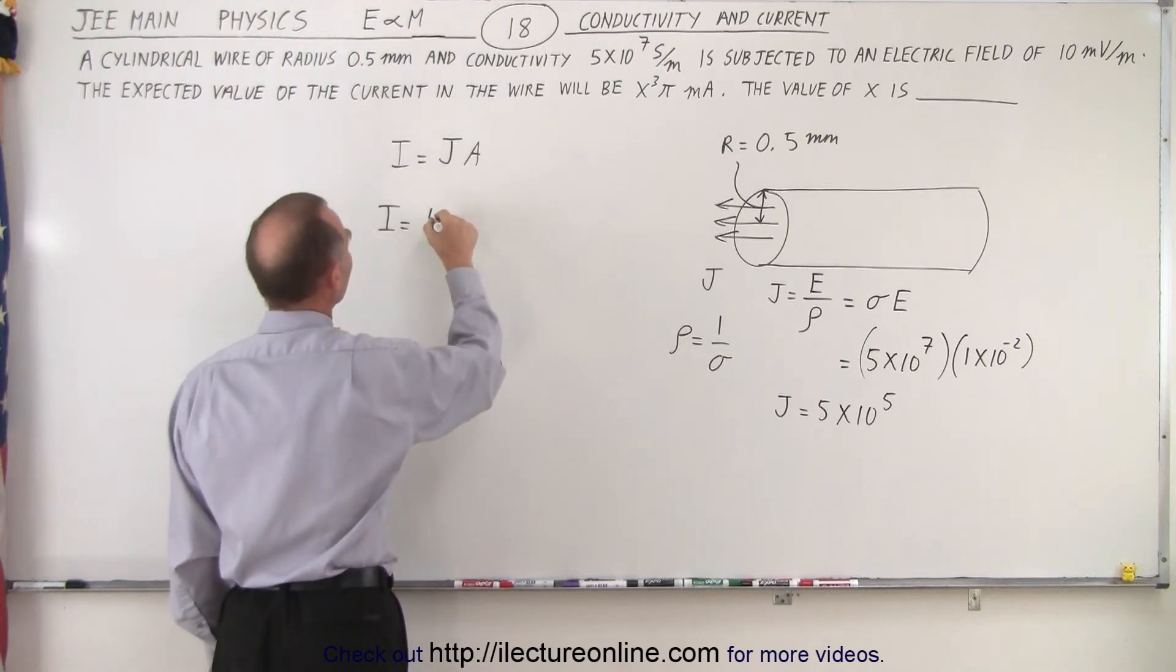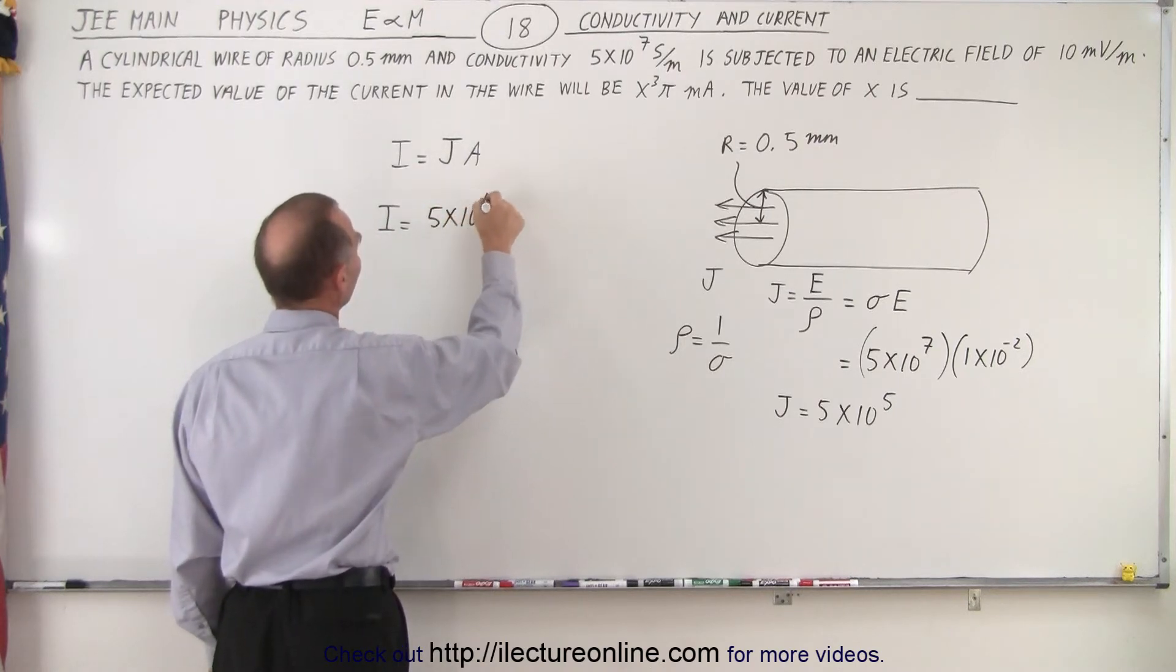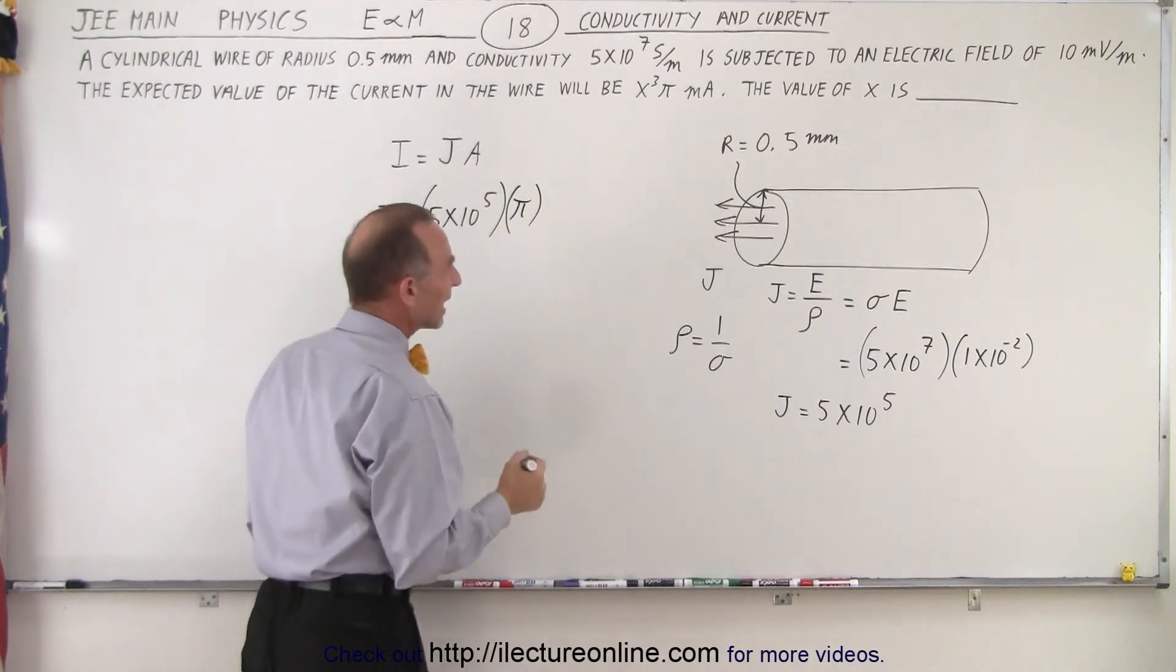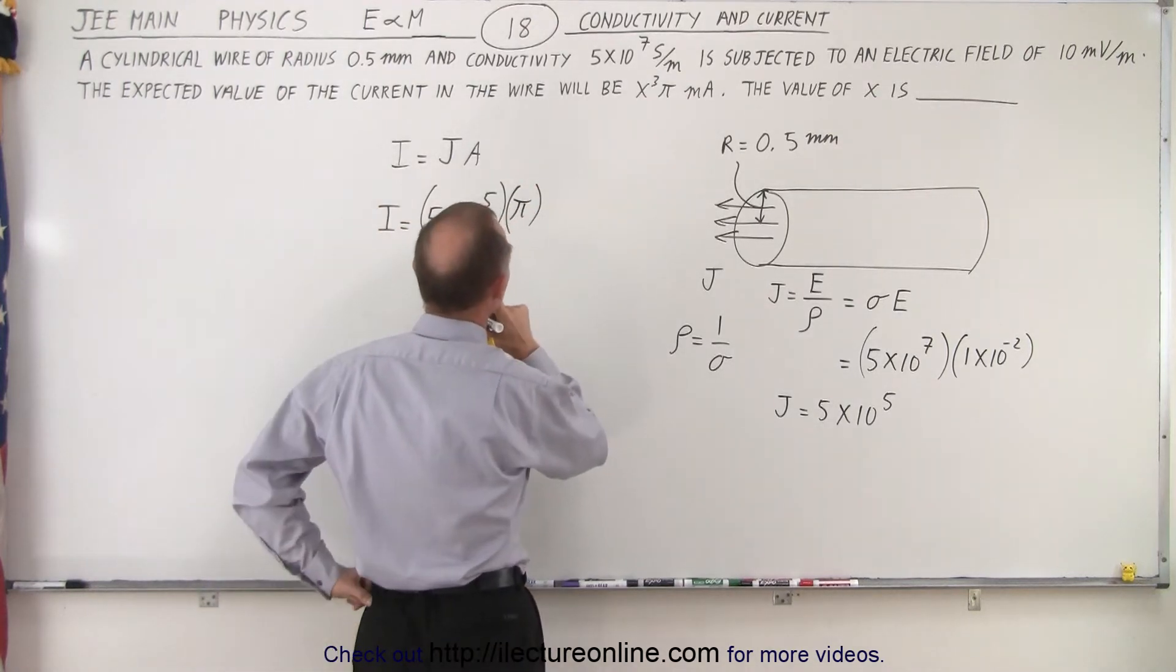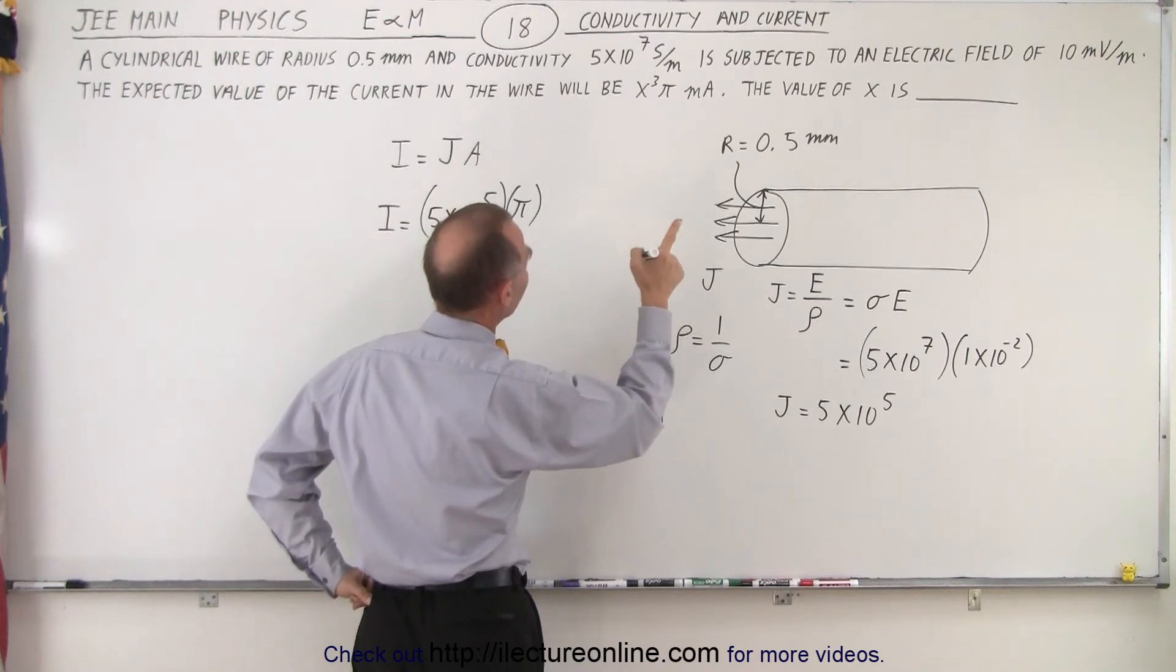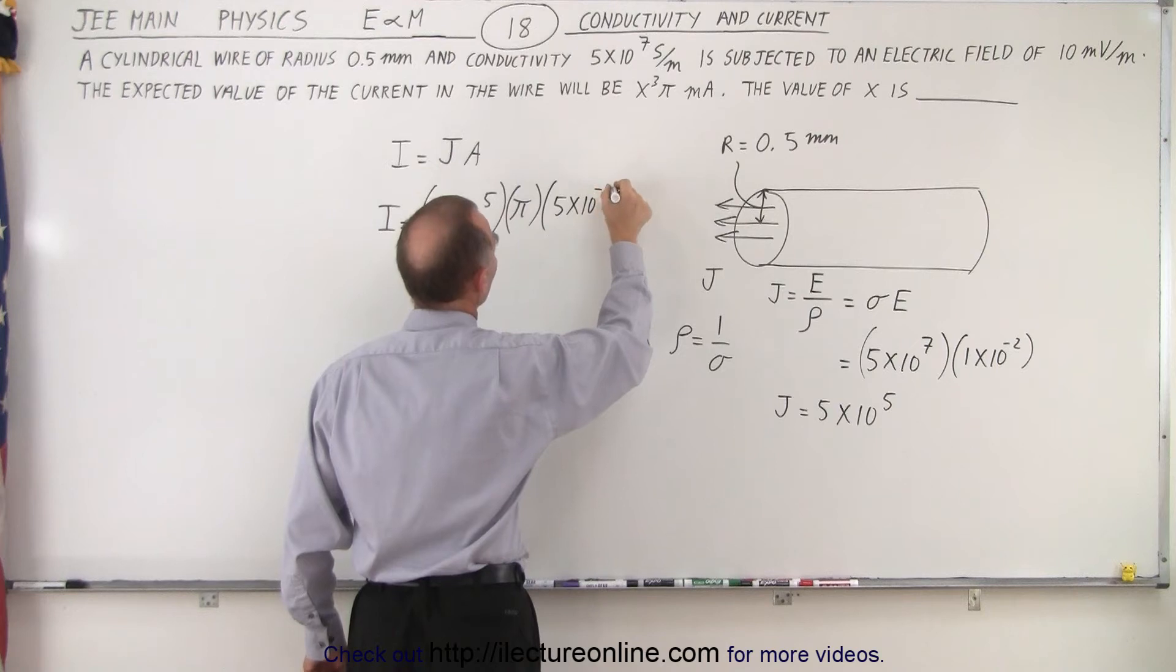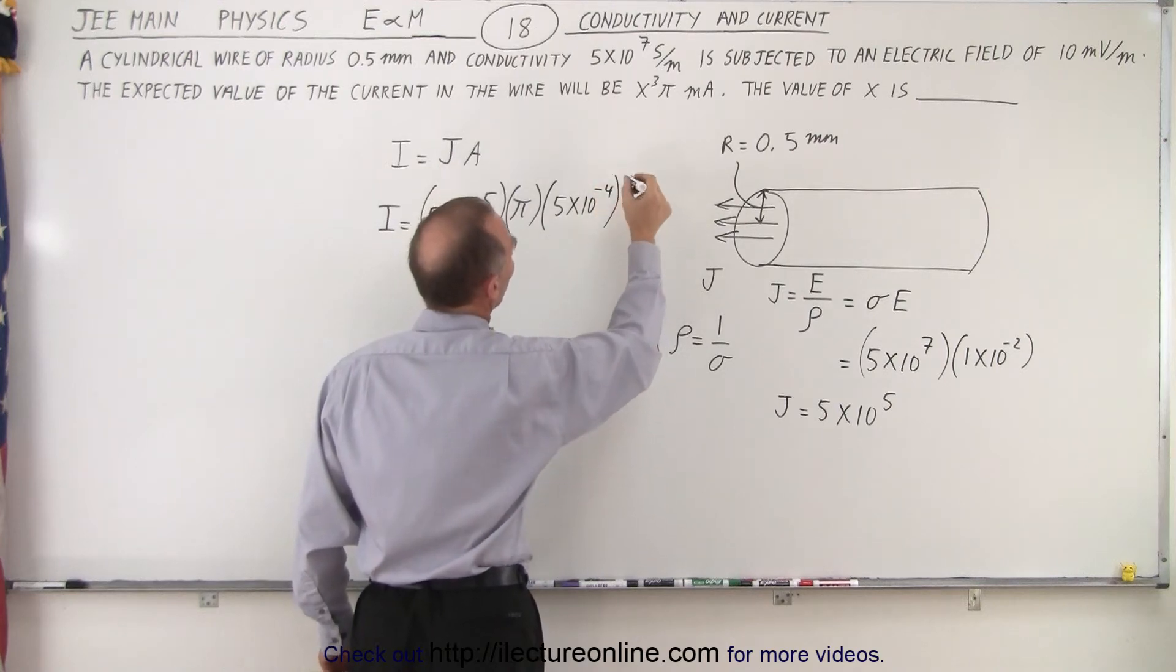So the current density is 5 times 10 to the fifth, and we're going to multiply times the area, which is pi times the radius squared. The radius is 0.5 millimeters,